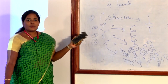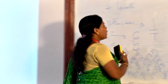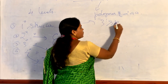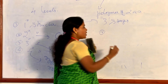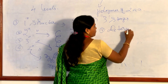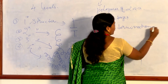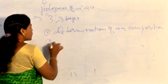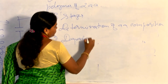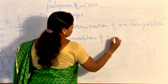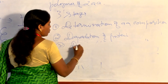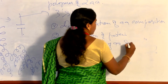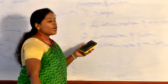Moving on to the primary structure again — it has three stages. The first is determination of amino acid composition, the second is degradation of protein, and the third is determination of amino acid sequence.